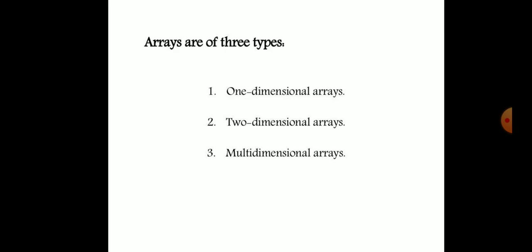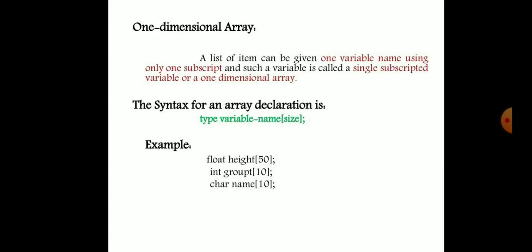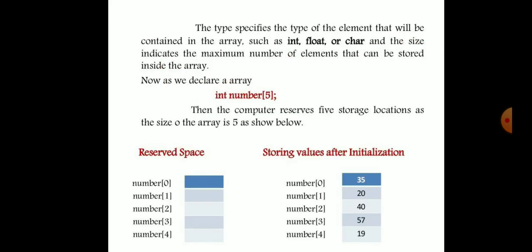There are three types of arrays: one-dimensional array, two-dimensional array, and multi-dimensional array. In a one-dimensional array, a list of items can be given one variable name using only one subscript. The syntax is: type, variable name, and size. For example, float height[50] — here float is the type, height is the variable name, and 50 is the size, so only one subscript is provided.